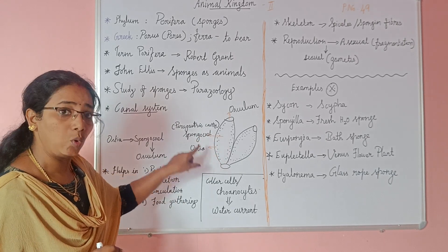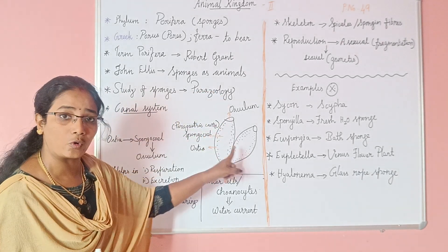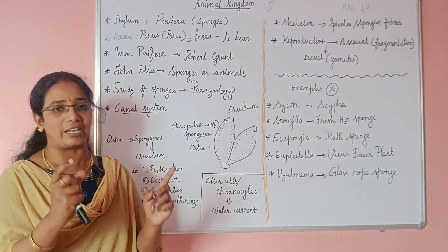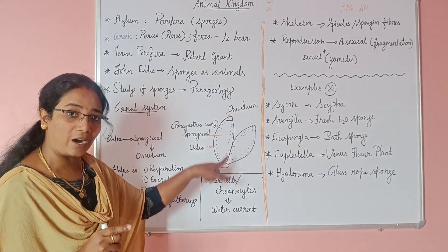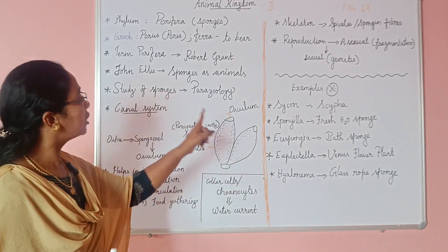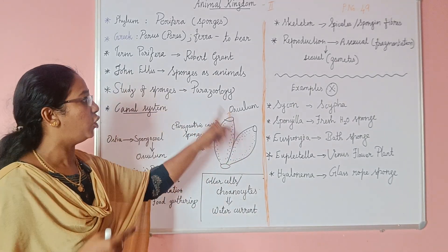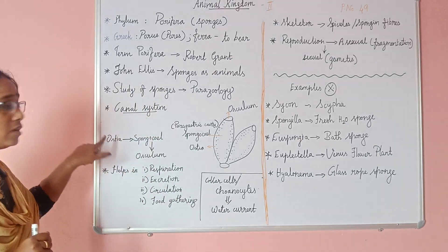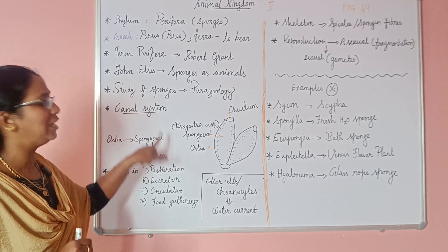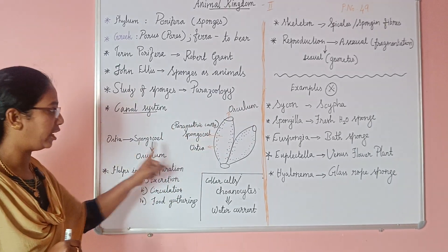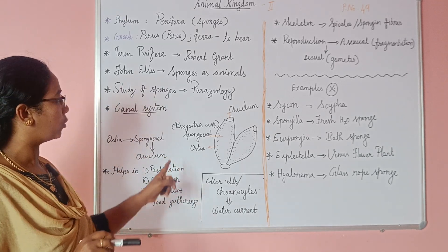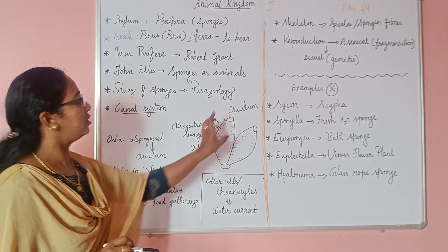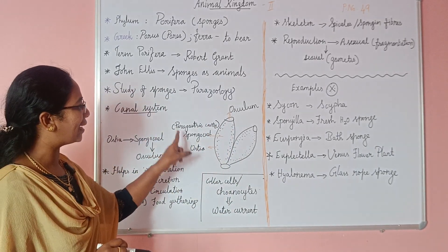The ostia lead to water movement in the body. Water enters through the ostia and moves into the spongocoel. The spongocoel is the cavity — also known as the paragastric cavity. So: ostia → spongocoel (paragastric cavity). This is a very important exam question.